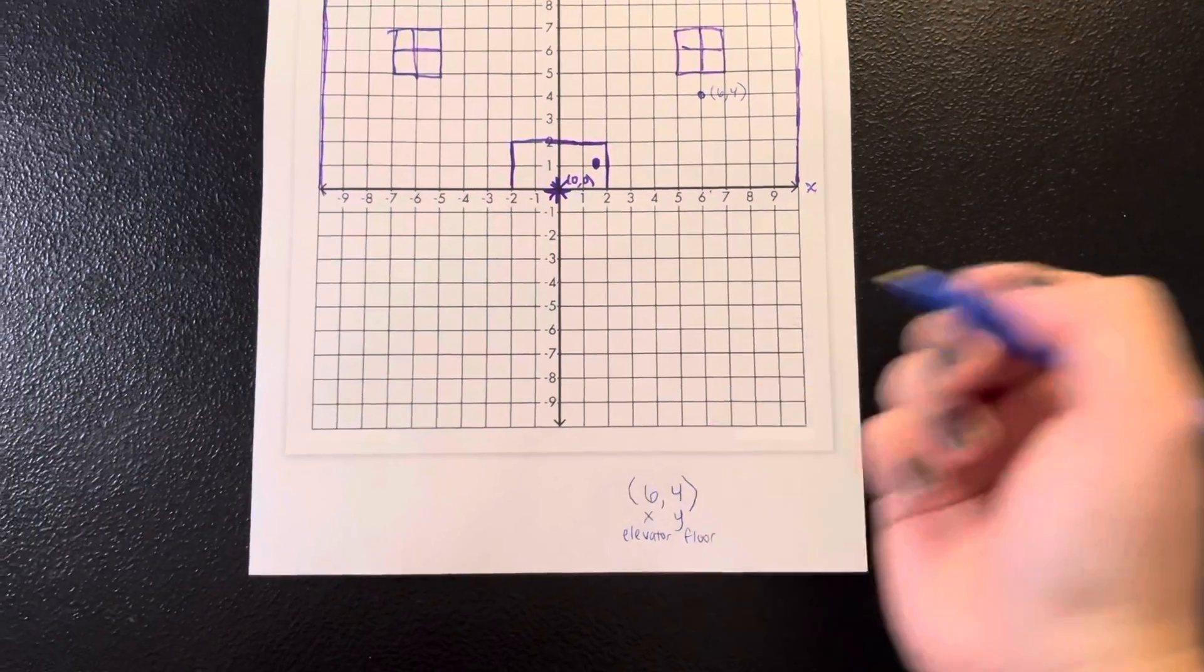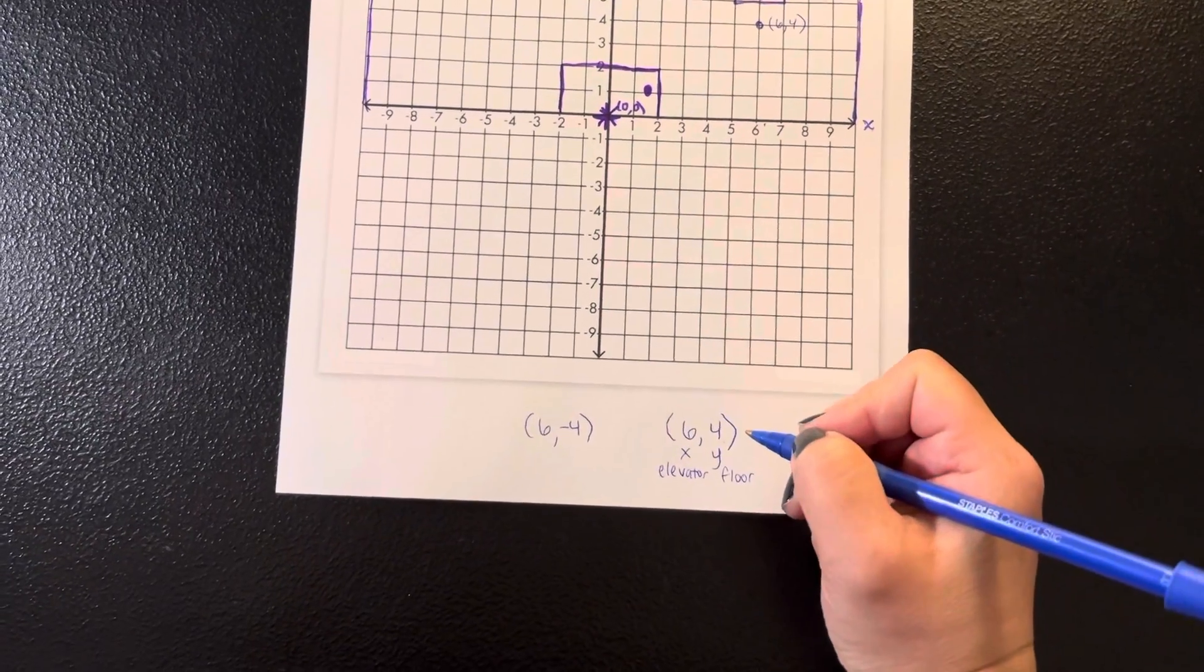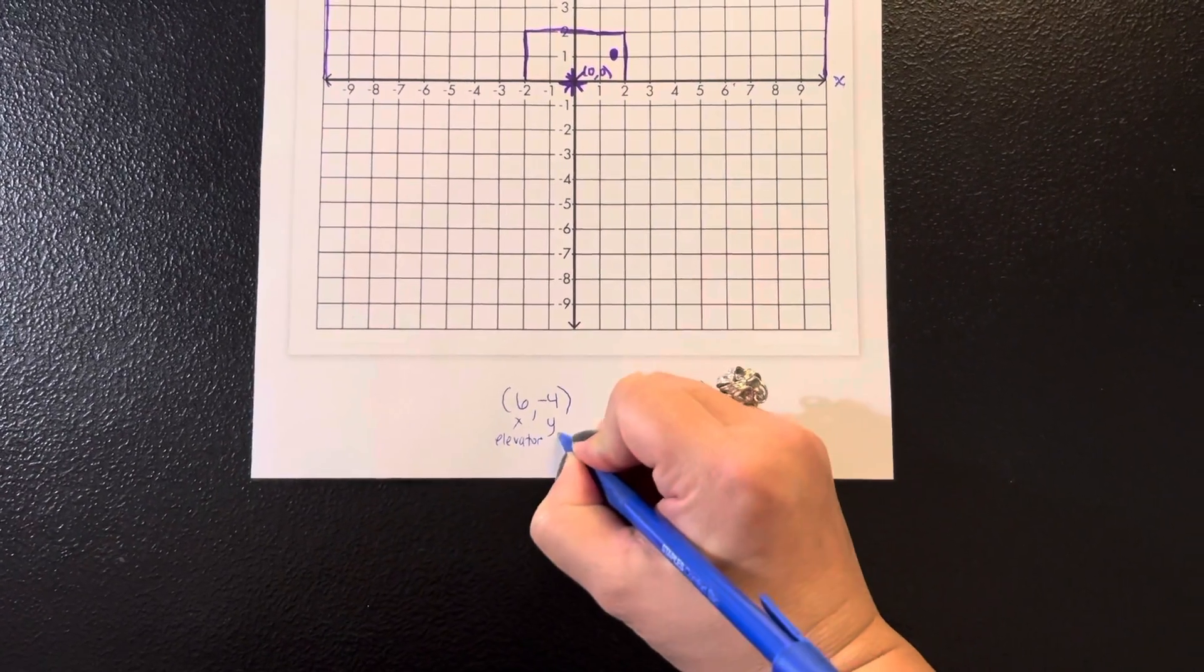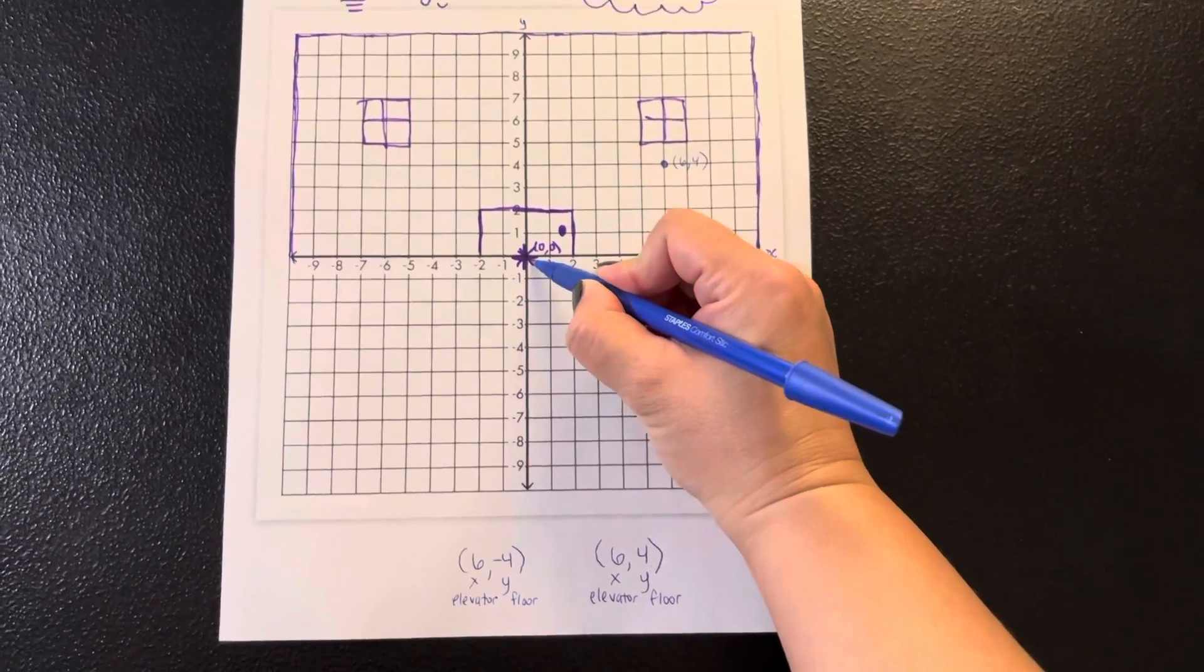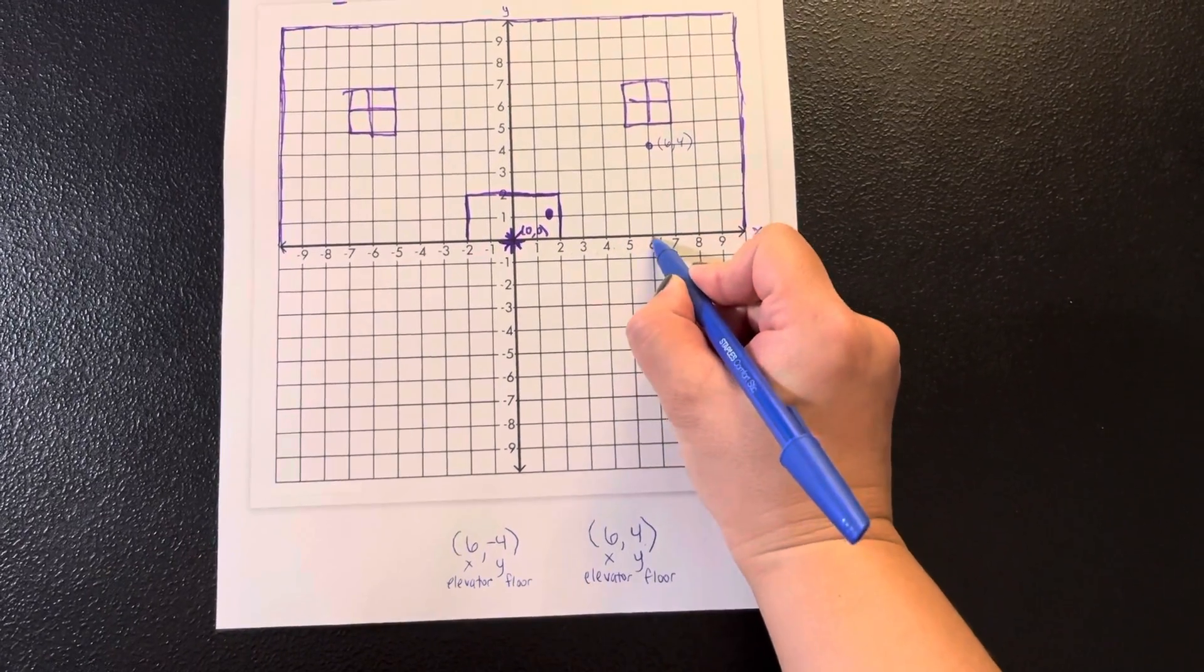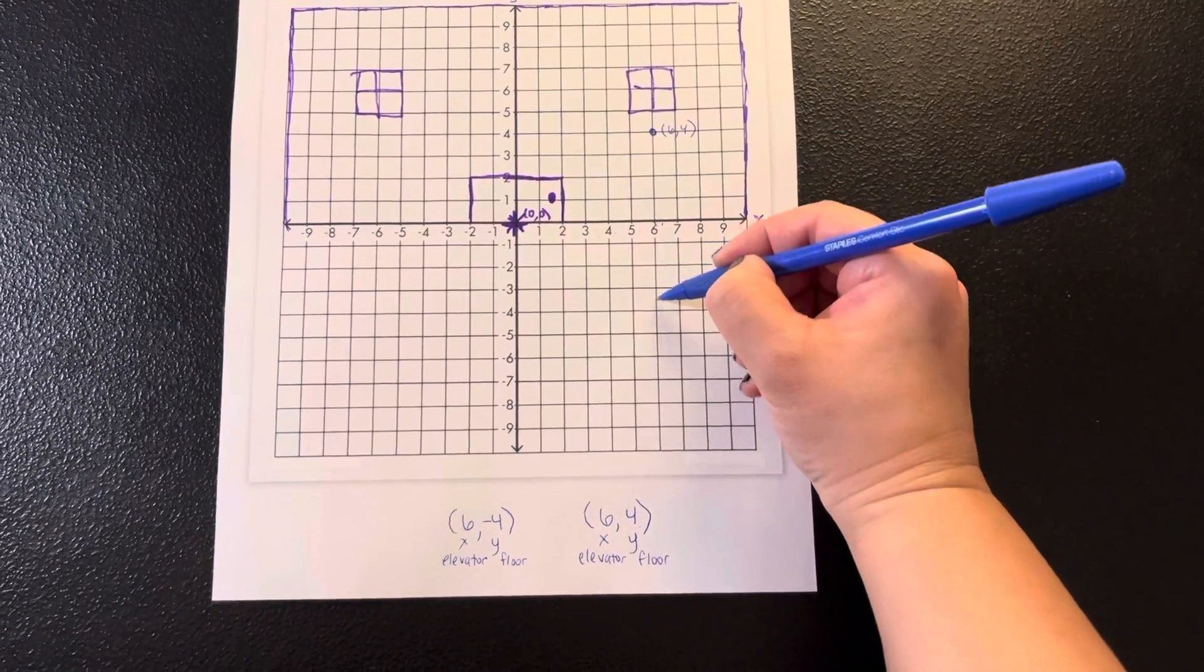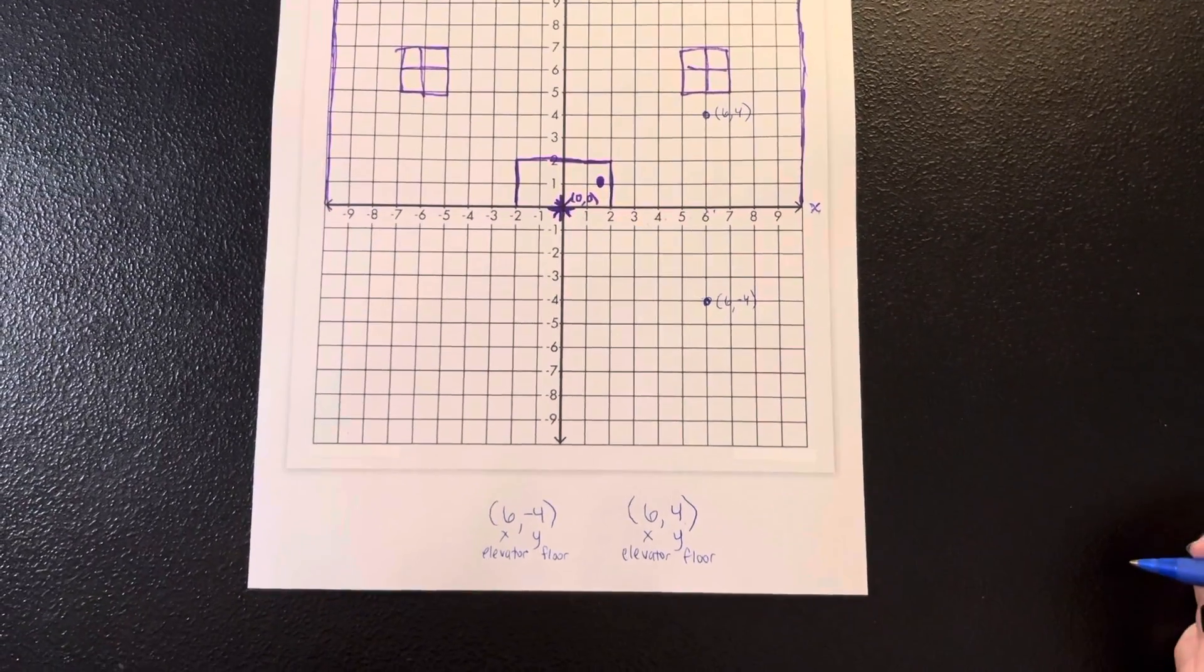Now, just to show you another example, let's say we want to go downstairs this time. Six, negative four. So I'm going to do X, Y, elevator, floor. So again, I walk in to my doorway at the origin. Again, it's telling me to find elevator six. So I'm going to walk to the right to find elevator six. And then this time it's telling me to go downstairs because it's negative. So go downstairs to floor four. There I am. Six, negative four.